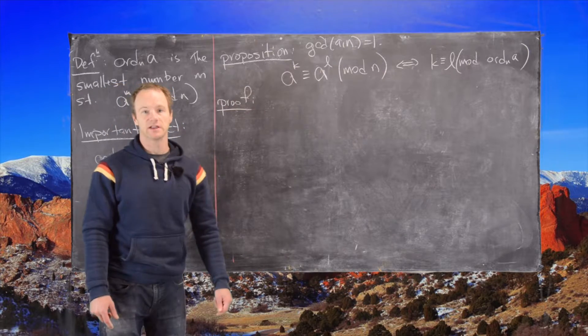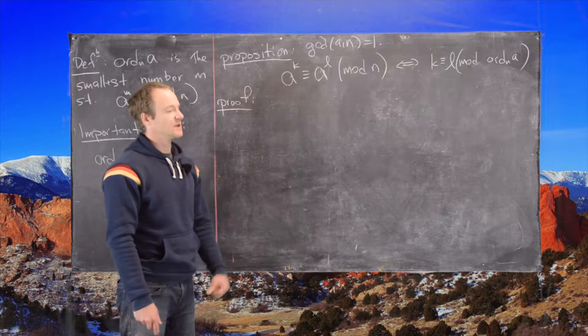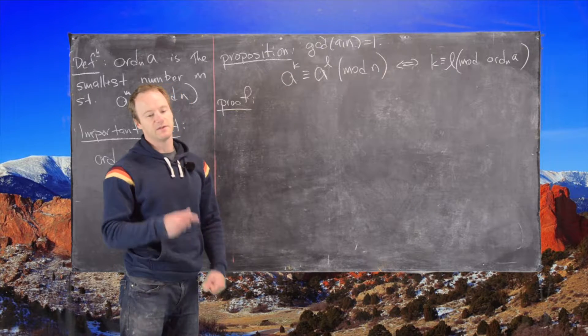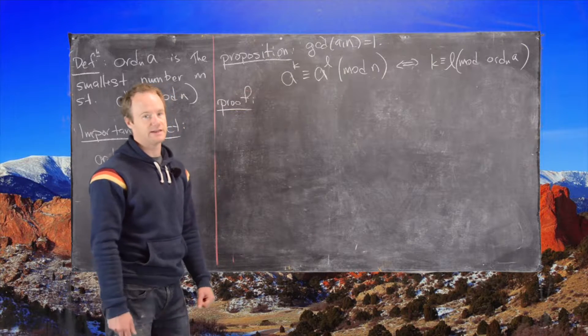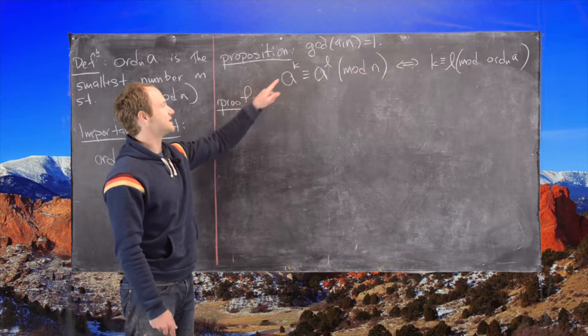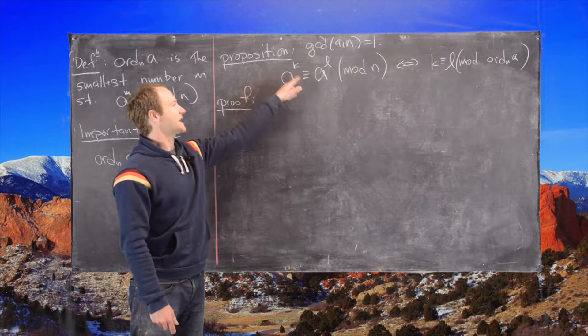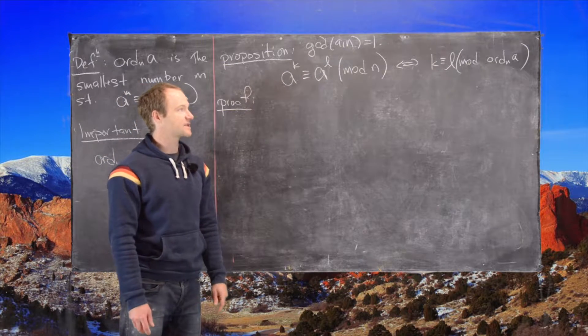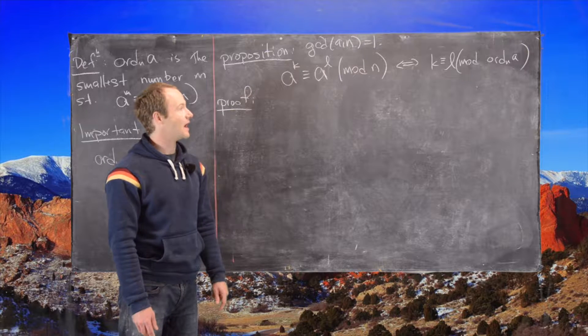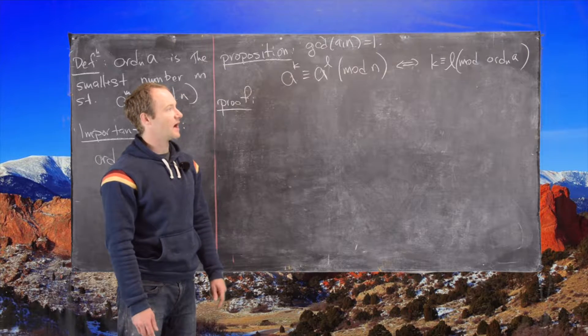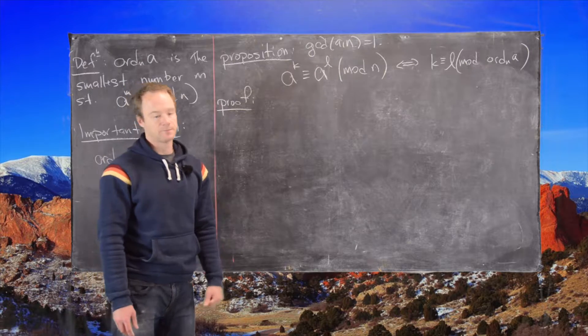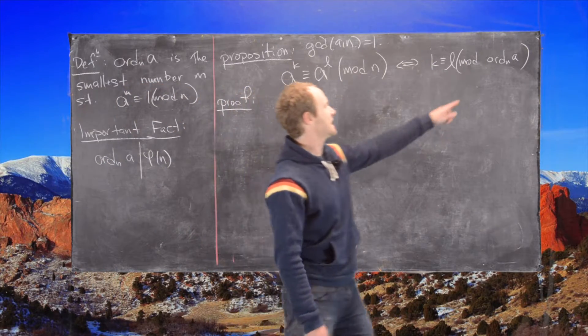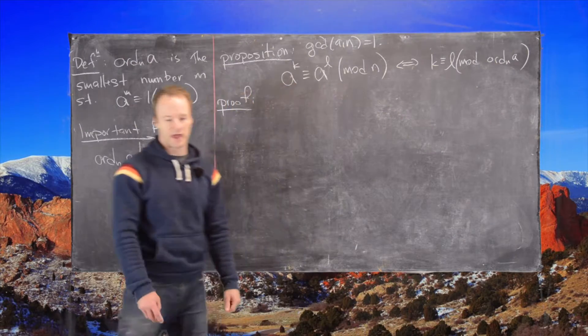And this proposition looks a little like taking a logarithm. So there is something called a discrete logarithm for stuff like this that we'll look at later, but this is like a precursor to that idea. So the proposition says the following: a to the k is congruent to a to the l mod n if and only if k is congruent to l modulo the order of a. So it's interesting that here we're working mod n and here we're working mod the order of a.